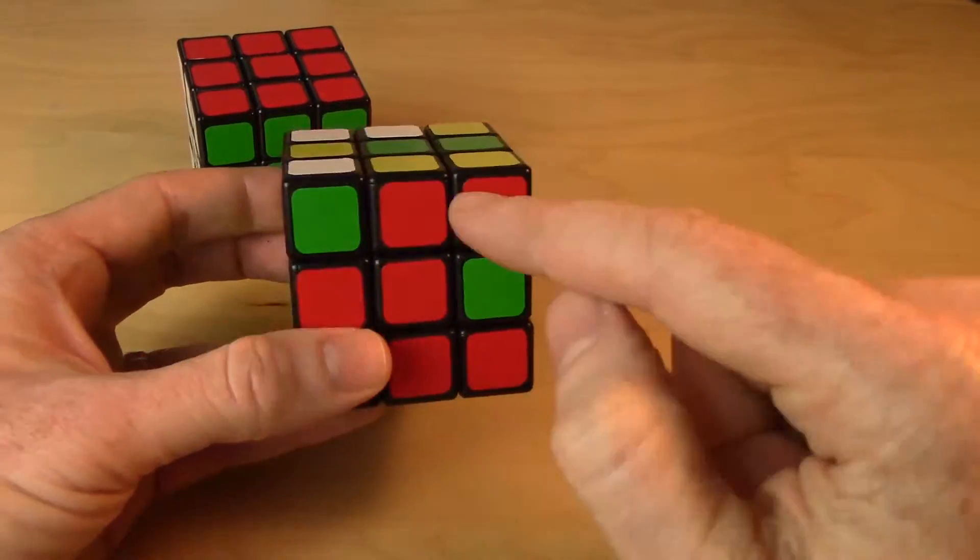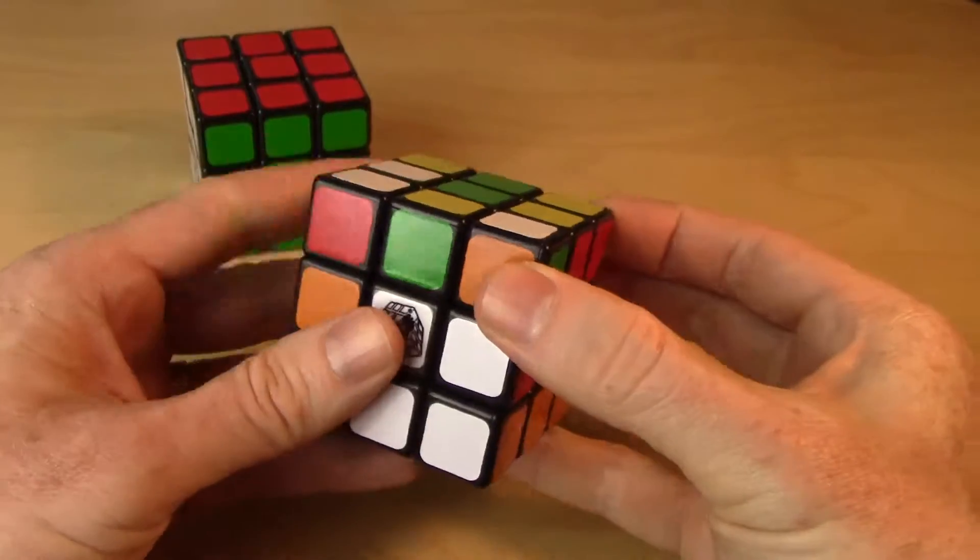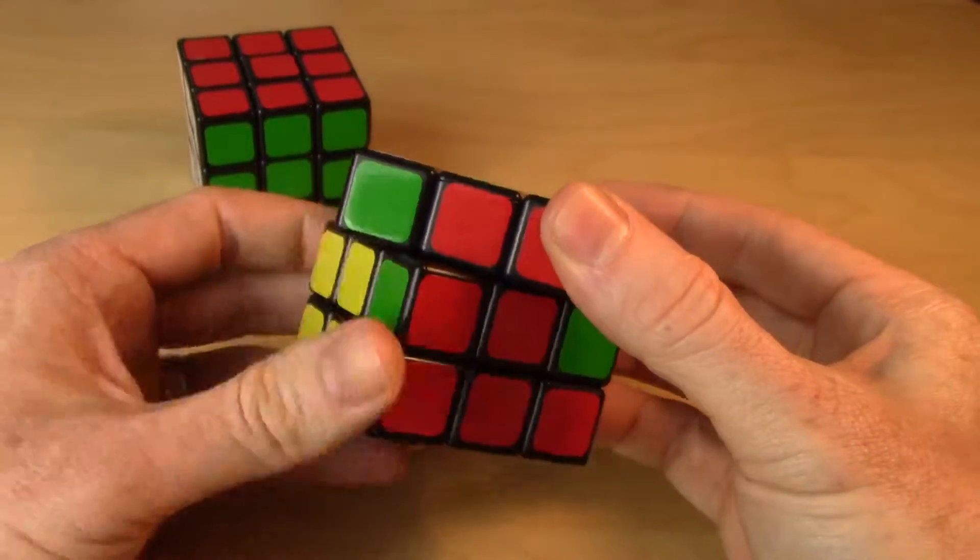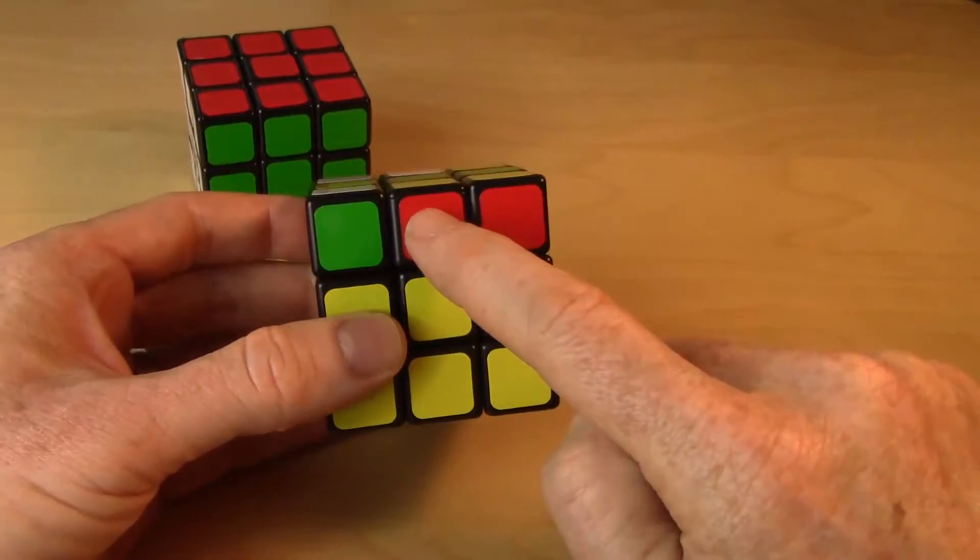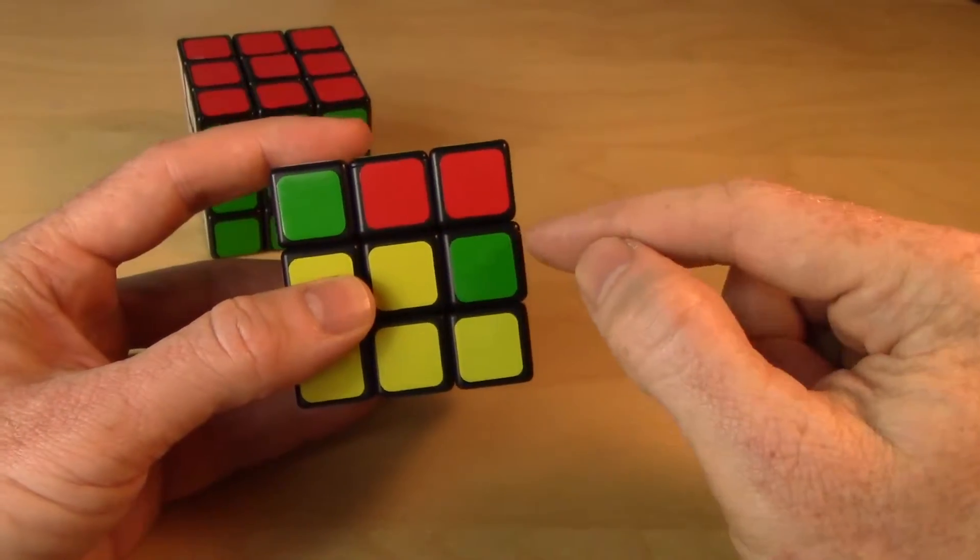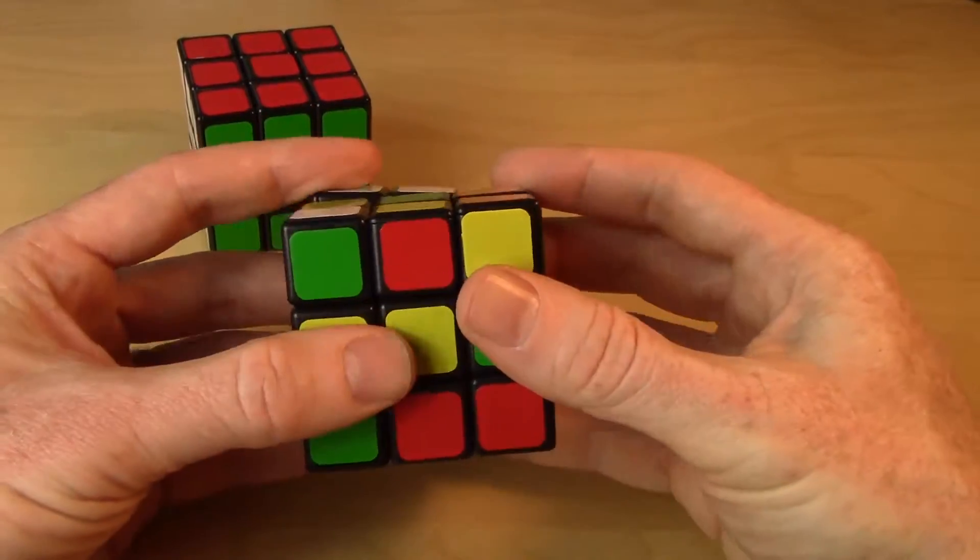So let's do it again. I've got a red-yellow, so I scan around. It needs to go, where are we, red-yellow, there it is. It needs to go there. So I need to send it to that location there. So I need to take that piece and temporarily put it here. Now cycle using our 3-cycle.